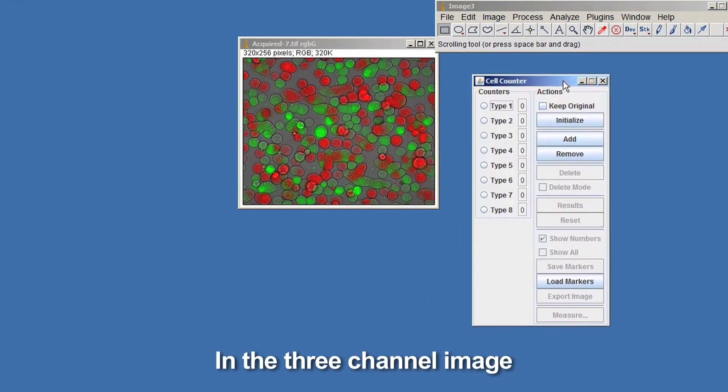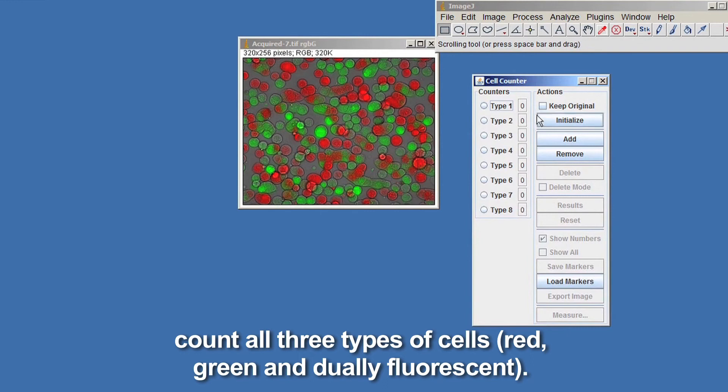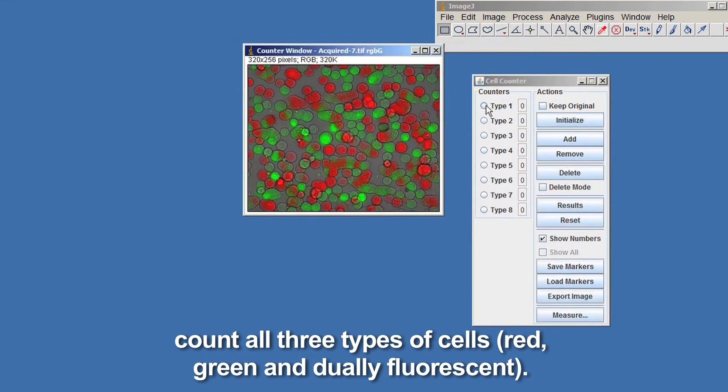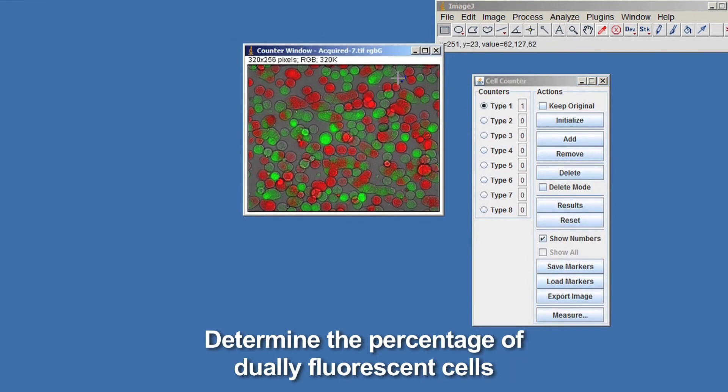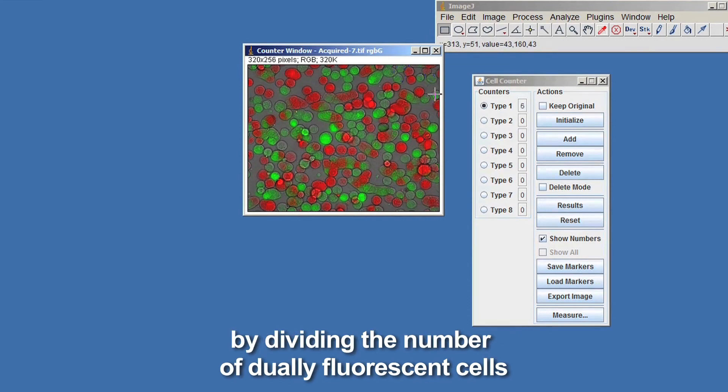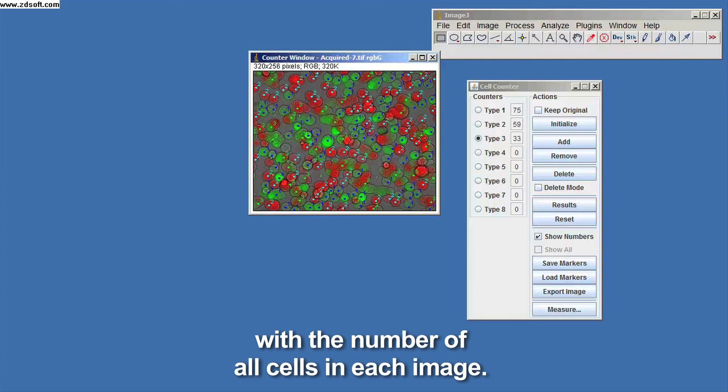In the three-channel image, count all three types of cells: red, green and dually fluorescent. Determine the percentage of dually fluorescent cells by dividing the number of dually fluorescent cells with the number of all cells in each image.